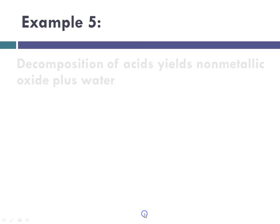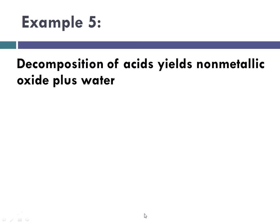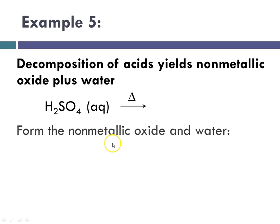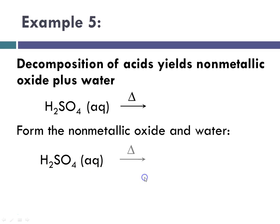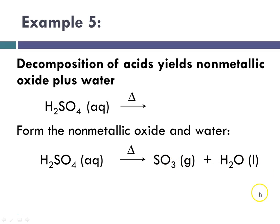Example five: the decomposition of acids, which yields the non-metallic oxide plus water. Here, we're decomposing sulfuric acid with heat, and it's going to form the non-metallic oxide and water. So H2SO4 (aqueous) will decompose, and we will get sulfur trioxide, which is a gas at room temperature, and water, which is a liquid.